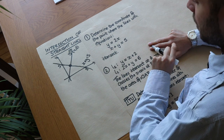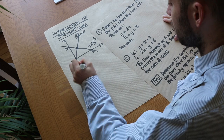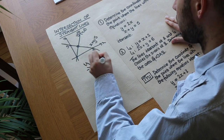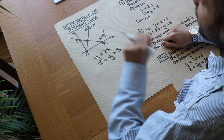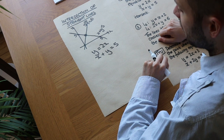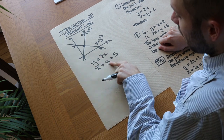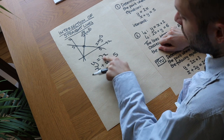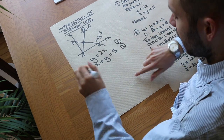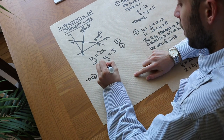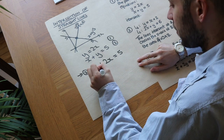If a point is on both lines, it must satisfy both equations simultaneously. So we're solving simultaneous equations to find an x and y that satisfy both. We have equation 1: y equals 2x, and equation 2: x plus y equals 5. Using substitution — since y equals 2x, we replace y in equation 2 with 2x, giving x plus 2x equals 5, so 3x equals 5.